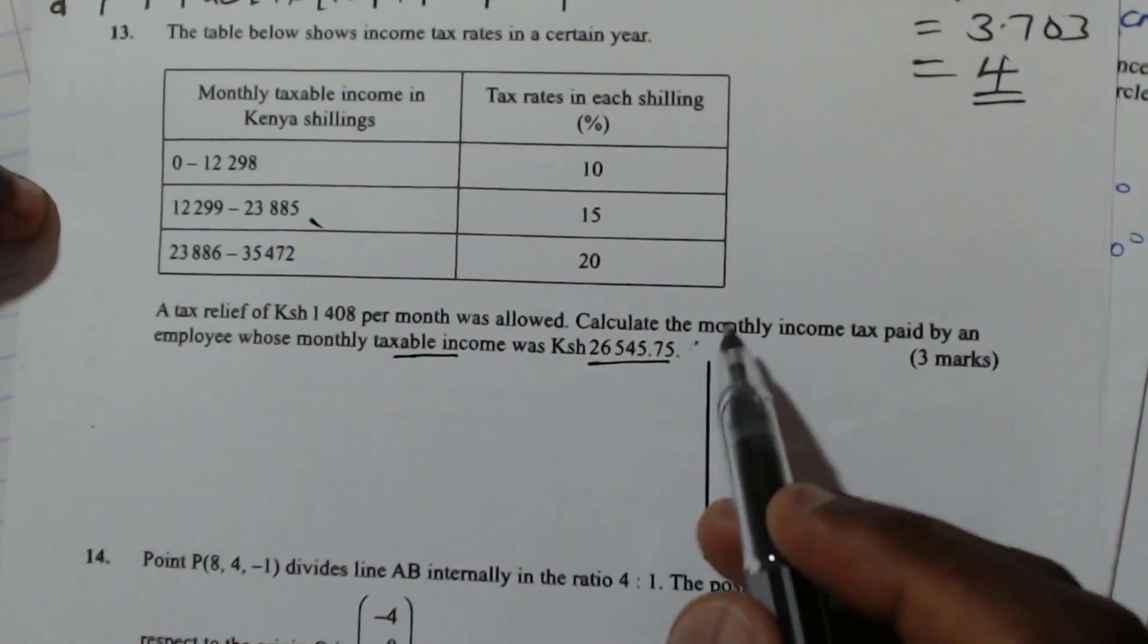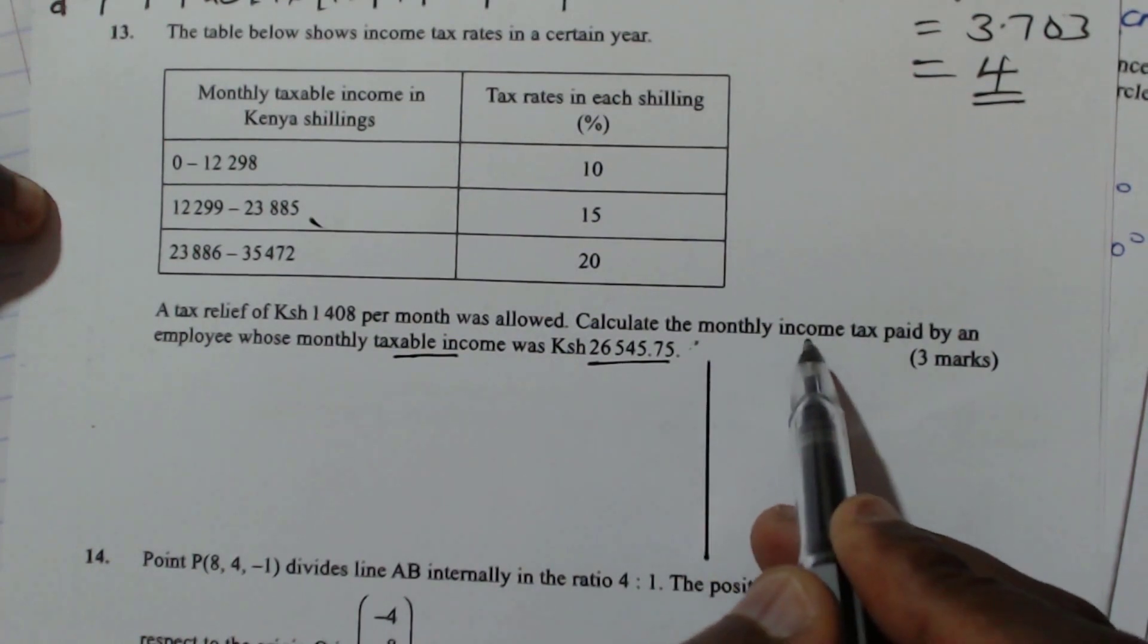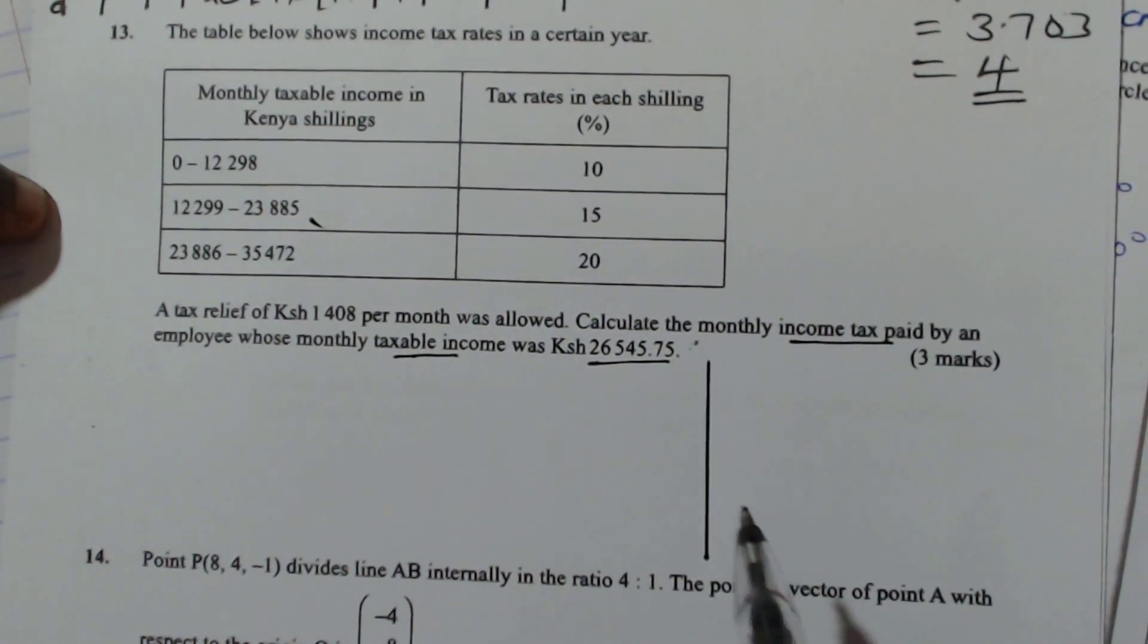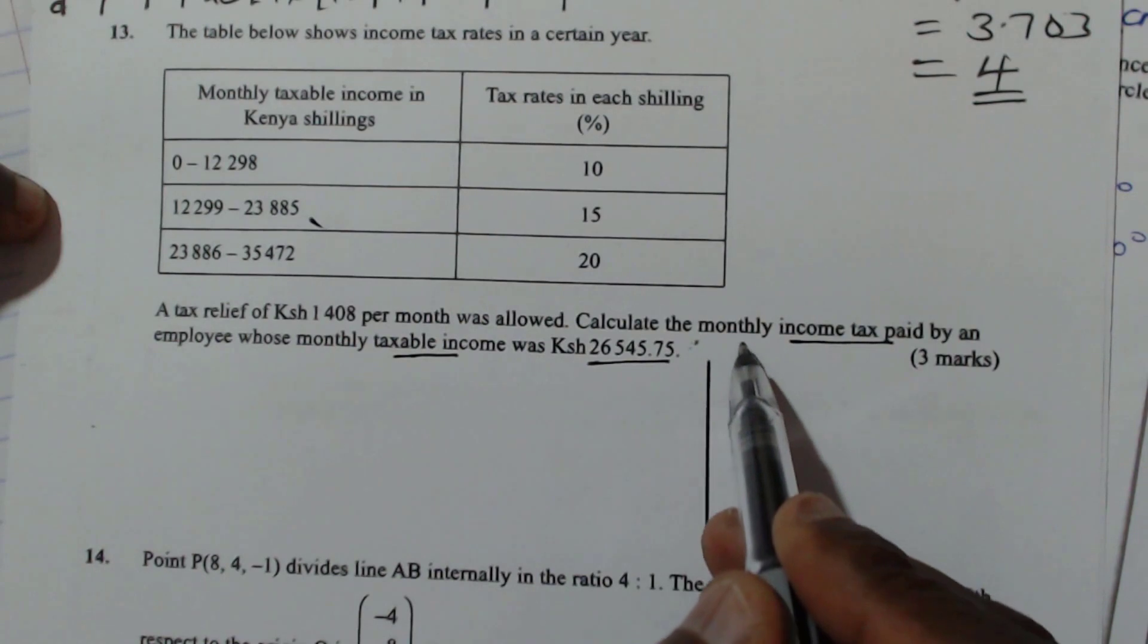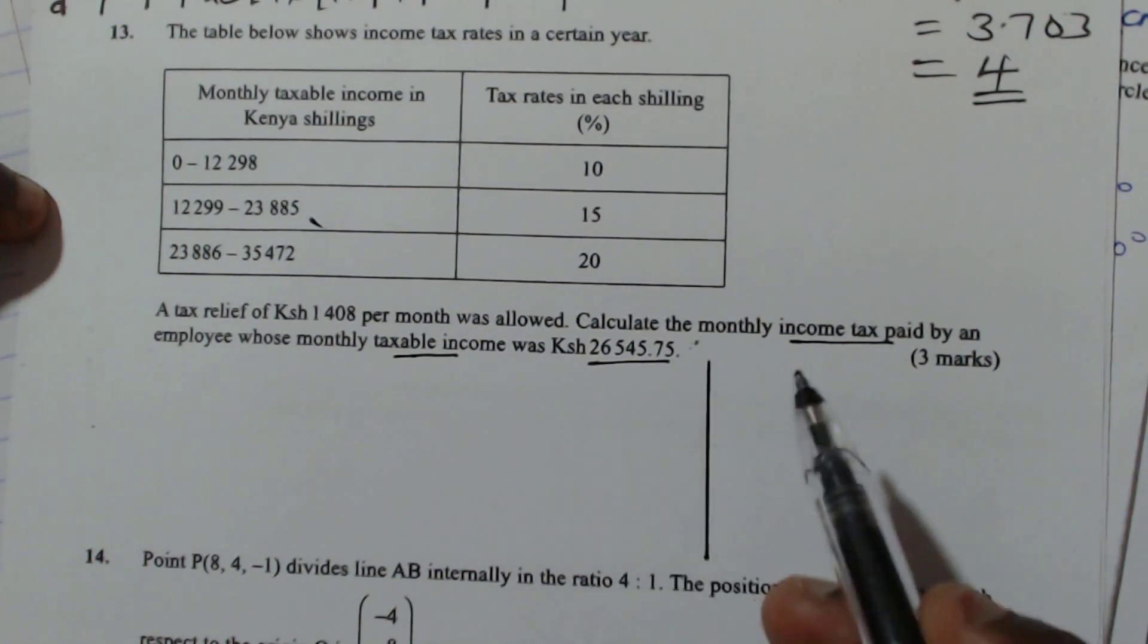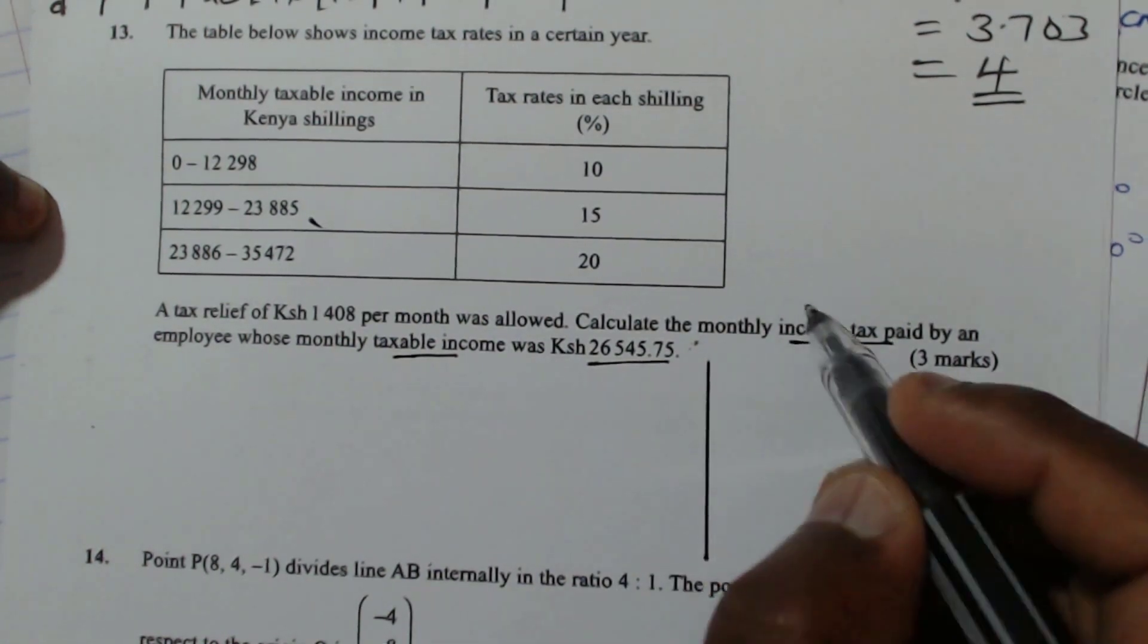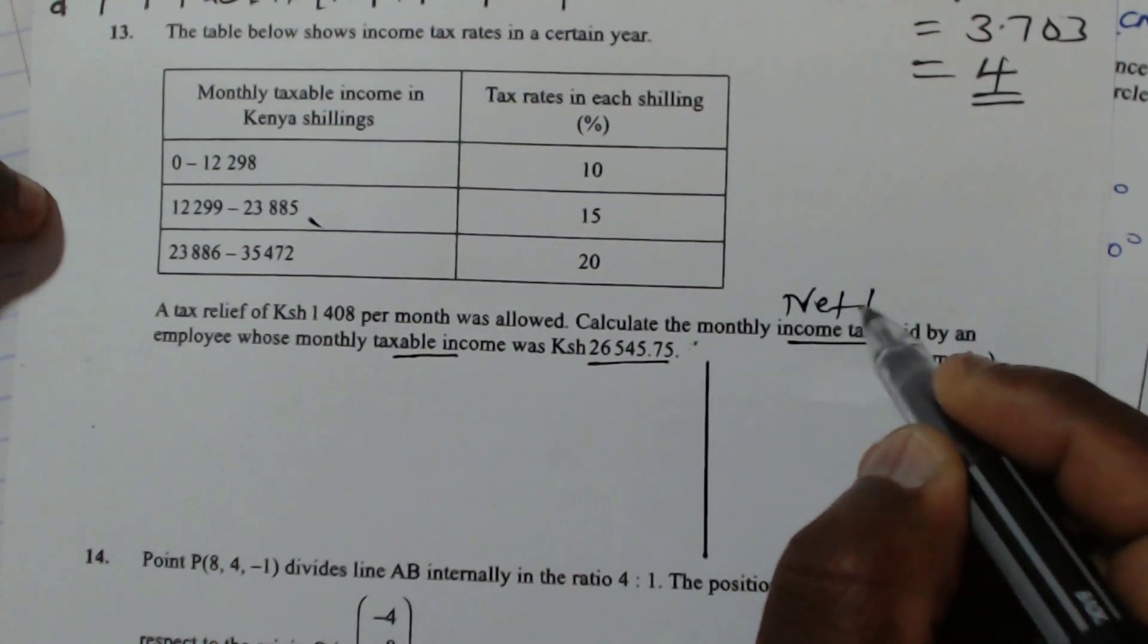So the question is calculate the monthly income tax paid by an employee. So which tax is this? Is it the gross or is it the net? This is the net tax that is supposed to calculate.